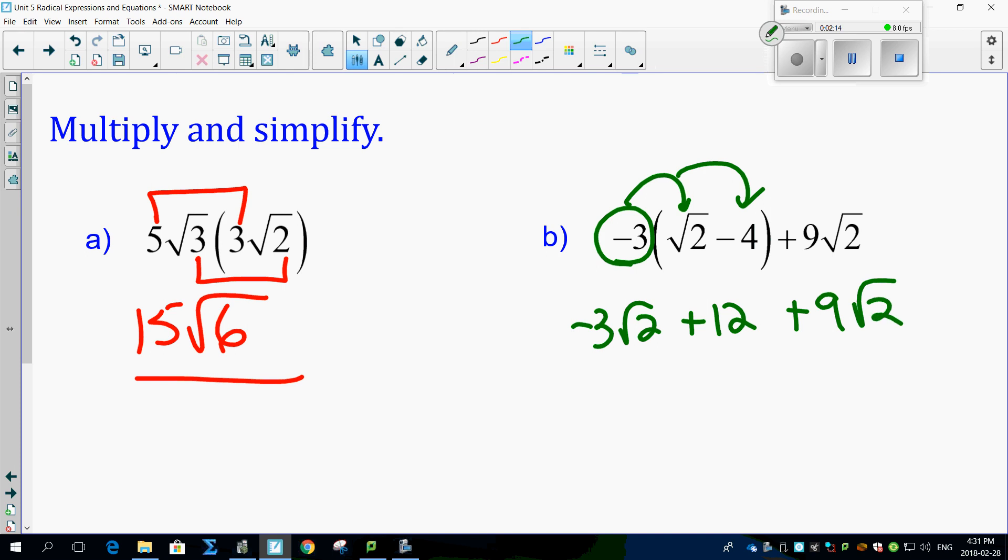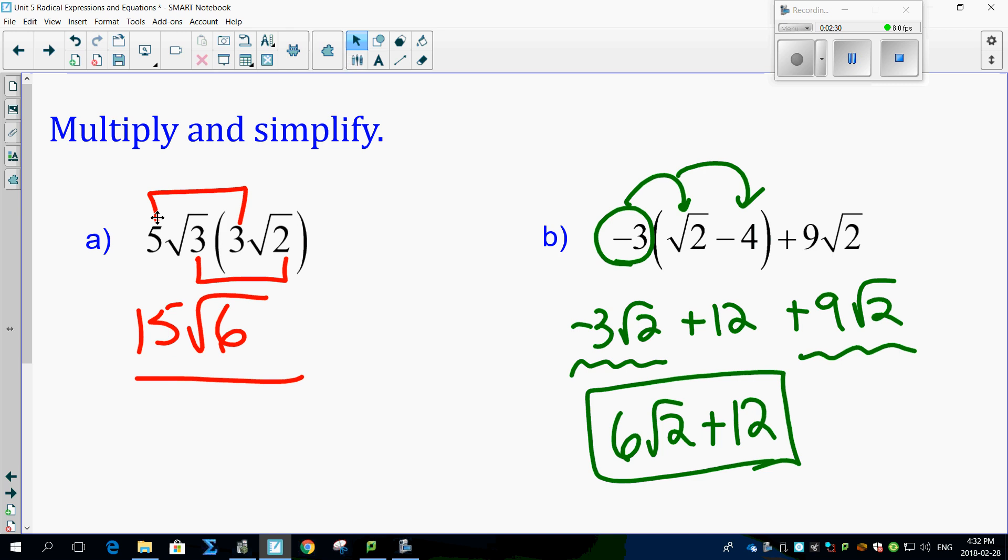All you have to do now is, guess what? Combine like terms, right? So you've got 9 root 2 and minus 3 root 2 works out to be 6 root 2 plus 12. The 12 and that cannot combine. That's your final answer. That's not so tough now, is it?